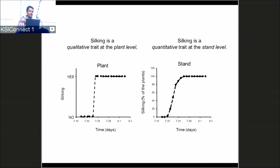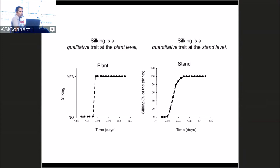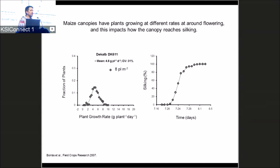I'm introducing the concept that canopies are variable and each individual plant reaches silking at different moments. There is plant-to-plant variability within commercial stands. Here I'm showing a maize canopy — a commercial genotype from the US grown in Iowa at commercial stand density. The average plant growth rate is around 5 grams per plant per day, but there's variability: some plants grow at 3–4 g/plant/day (dominated plants) and others at 6–8 g/plant/day (dominant plants).